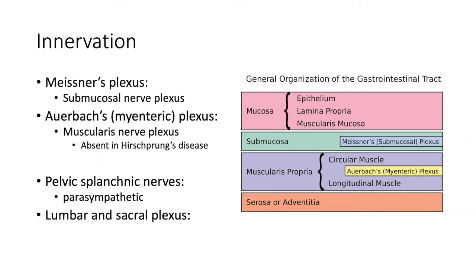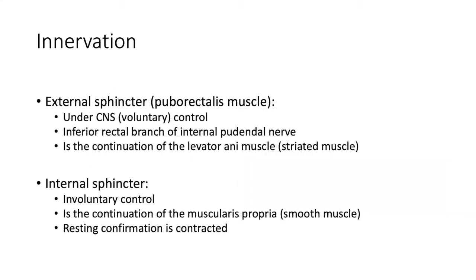The pelvic splanchnic nerves are your parasympathetics and the lumbar and sacral plexus are your sympathetics. The external sphincter or extension of the puborectalis is striated muscle — it's under voluntary control, really innervated by an inferior branch of the internal pudendal nerve. The internal sphincter — if it's a continuation of the smooth muscle in the wall of your lowermost rectum — is under involuntary control, and the resting configuration for the internal sphincter is contracted. That's why colorectal surgeons do DREs and then ask someone to squeeze — you're asking them to control different sphincters.